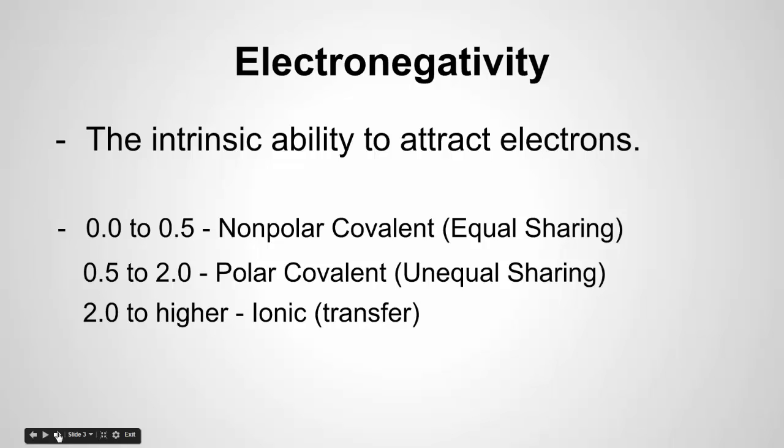Then we increase 0.5 to 2.0 is polar covalent. There's an unequal sharing of electrons, and as we climb that scale, the closer we get to 2.0, the more polar it's going to become. So the higher the unequal sharing is going to become. And then at 2.0 and above, we go to ionic.